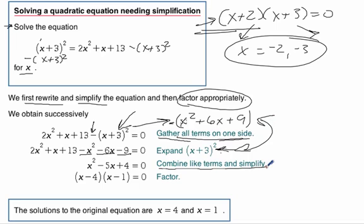Combining like terms, we check it out. We see we've got a 2x squared and a minus x squared. That gives us the x squared. We've got an x here and a minus 6x here. That makes a negative 5x. And then we've got a 13 and a minus 9. That makes 4.